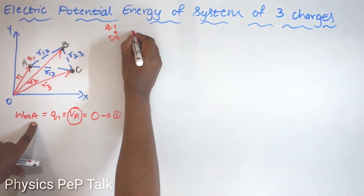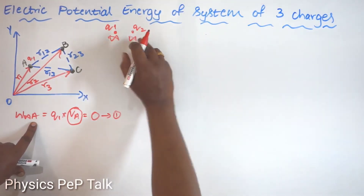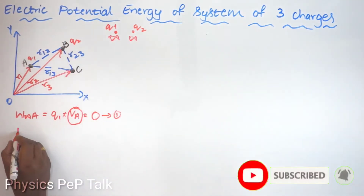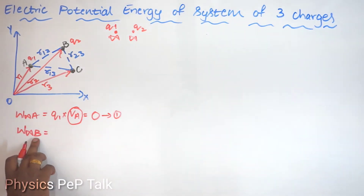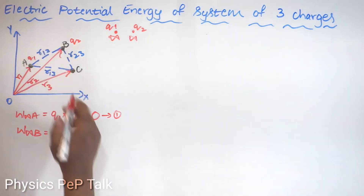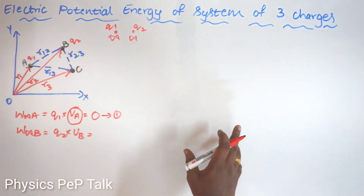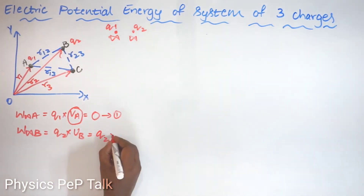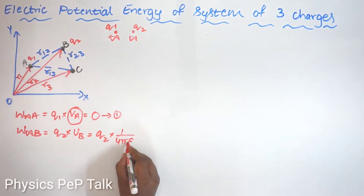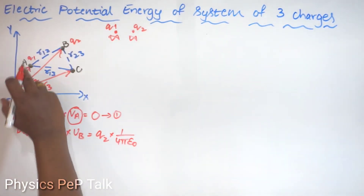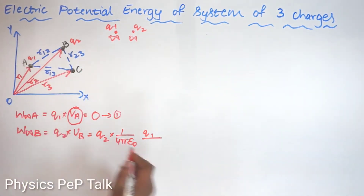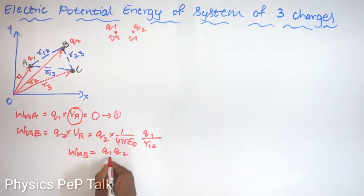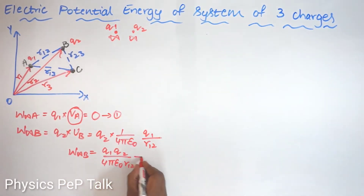Similarly, I will bring another charge Q2, which is also at infinite distance, to point B. I will call that work as W(∞→B). The work done in bringing Q2 from infinity to point B is the charge Q2 into the potential at point B. Now the potential at point B is not zero, because of charge Q1. So this will be Q2 into 1 by 4 pi epsilon naught × Q1 by R12, which equals Q1·Q2 by 4 pi epsilon naught R12. I will call this equation 2.